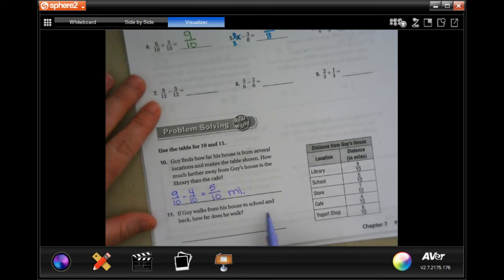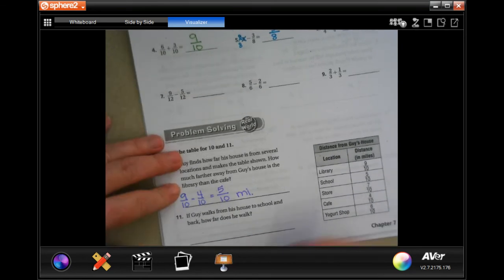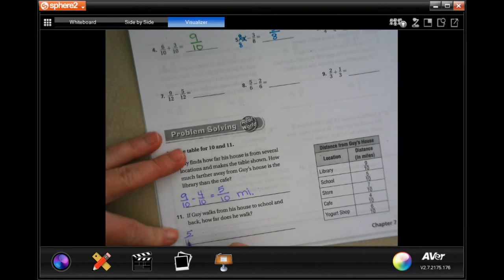If Guy walks from his house to school and back, how far is it? So five tenths to school and five tenths back home, right? So now that's ten tenths of a mile, which equals one mile.